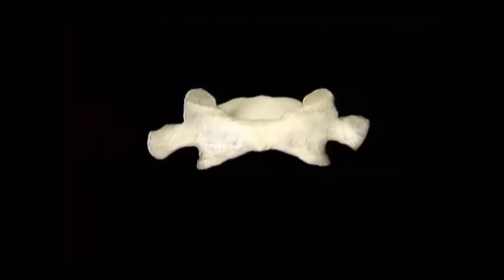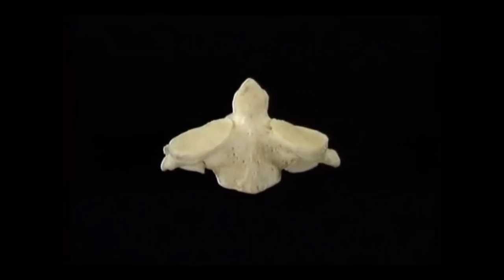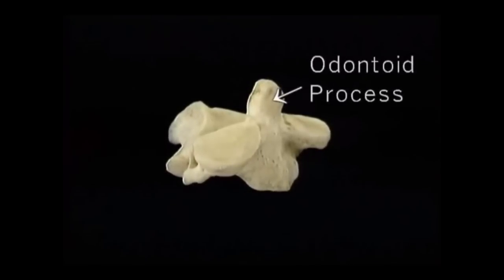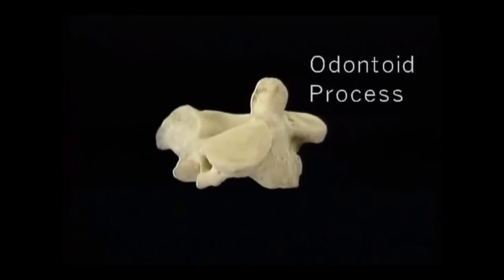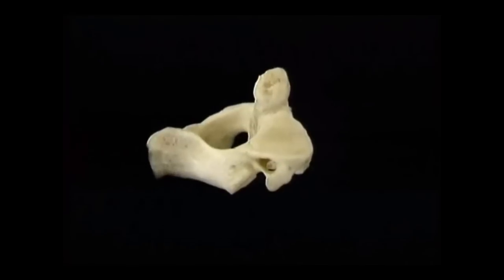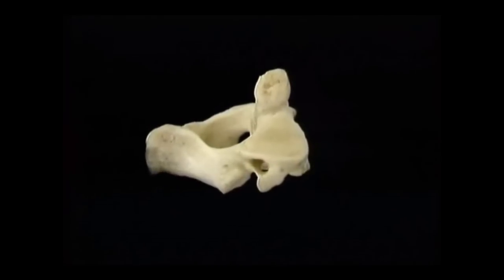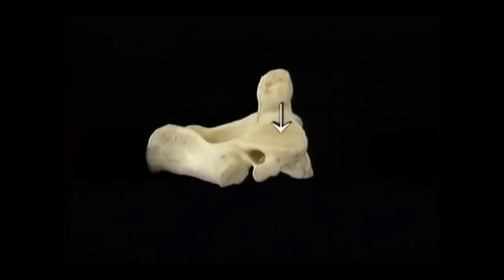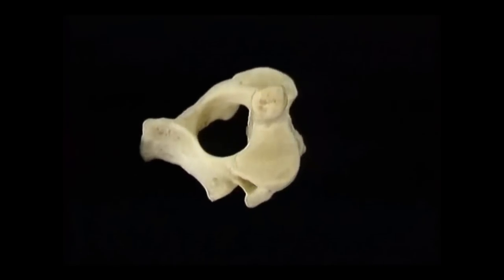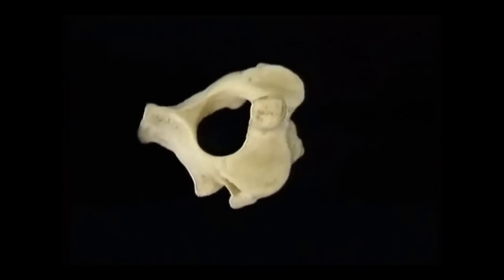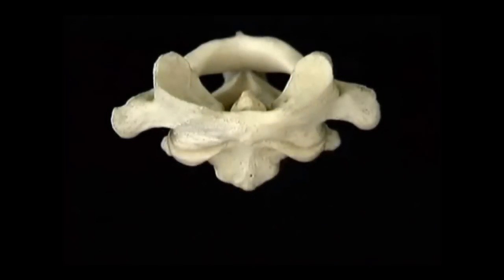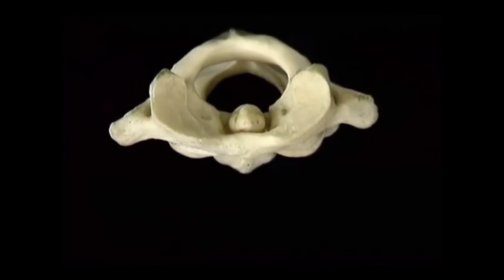Now let's look at the axis vertebra. The body of the axis is prolonged by this important projection, the odontoid process. In terms of development, the odontoid process represents the missing body of the atlas. In terms of function, it's the pivot around which the head, together with the atlas, rotates. The upper articular surfaces of the axis are placed well in front of the lower ones and are in a straight line with the odontoid process. As rotation occurs between these surfaces and those of the atlas, the odontoid process stays in the middle.